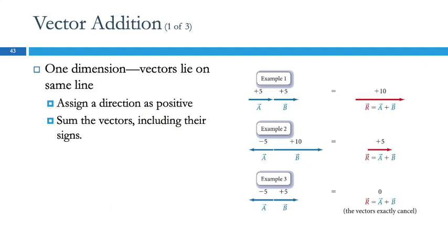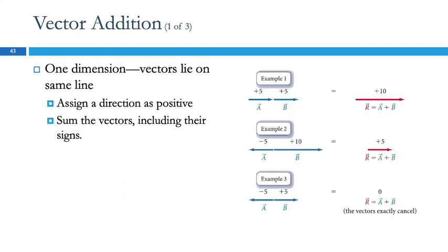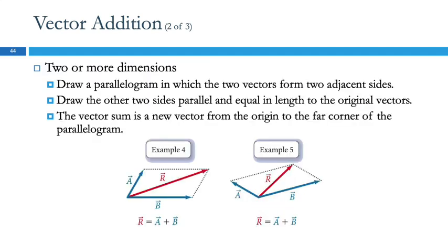For one-dimensional vector addition on a number line: plus five and plus five add to plus ten; negative five and positive ten add to positive five; positive five and negative five in opposite directions add to zero. The magnitude of a vector is related to the difference in electronegativity, but most of the time we'll see vectors of the same magnitude.